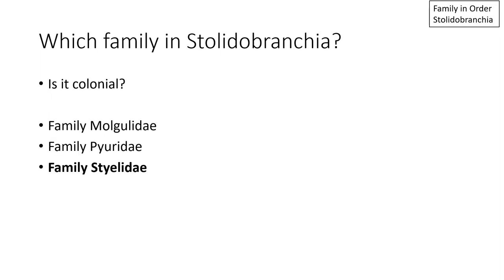In order to determine which family your Ascidian belongs to if you're in the Stolidobranchia, you need to first think about whether the individual is colonial or solitary. Colonial means genetically identical individuals living in close proximity to each other, attached to each other. Versus solitary — an individual living physically by itself, not attached to another individual of the same species. If the Stolidobranchia ascidian you're looking at is colonial, your only option for family is Family Styelidae.